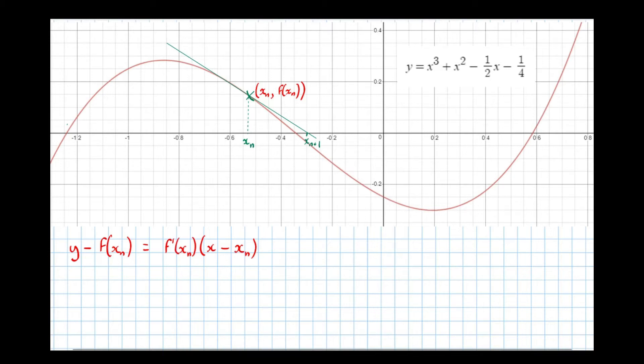We can see that the point xn plus 1 is where the tangent crosses the x axis. The tangent crosses the x axis when y equals 0. So we let y equal 0.